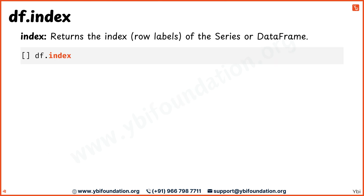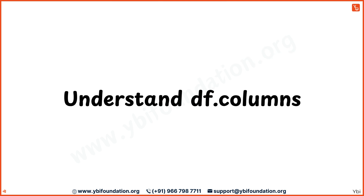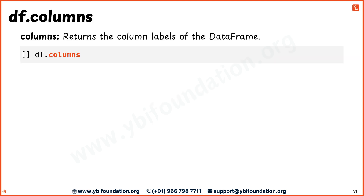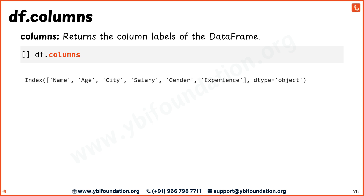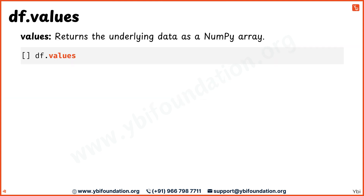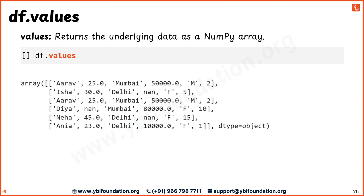The df.index attribute returns the index or row labels of the DataFrame. The output tells us that the DataFrame has 6 rows starting from index 0 to 5. The df.columns attribute returns the column labels or names of the DataFrame — here we see column labels: name, age, city, salary, gender, and experience. The df.values attribute returns the underlying data of the DataFrame as a numpy array. The output is data returned as a two-dimensional numpy array showing all values in the DataFrame.